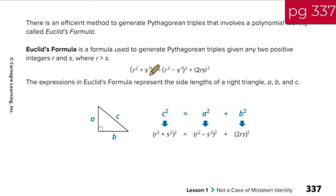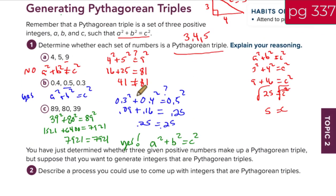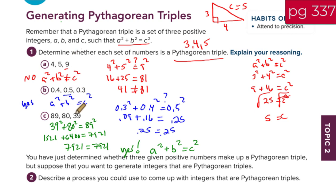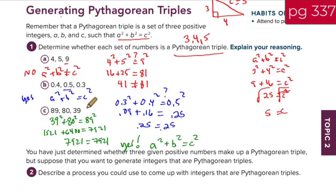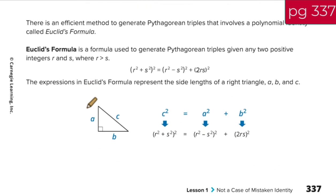And what he figured out is, if you have any two numbers, and your book calls them R and S, where R is the greater number, R is greater than S, you take those two numbers, you can figure out what the third number for that Pythagorean triple would be. So up here, they just gave us sets of numbers, and sometimes they worked, and sometimes they didn't. But what Euclid figured out is, if I give you two numbers, you can generate one, two, three of these numbers.